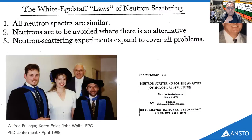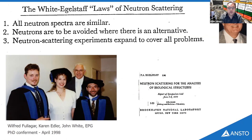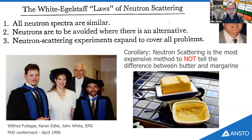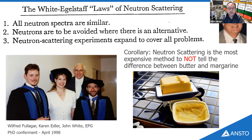The White-Eggelstaff laws of neutron scattering are stated here. John White was my PhD supervisor, and based on reading those laws, I would say that a corollary of number two would be that neutron scattering is the most expensive method to not tell the difference between butter and margarine. I'm hoping in this presentation I can convince you it's not quite as bad as that.